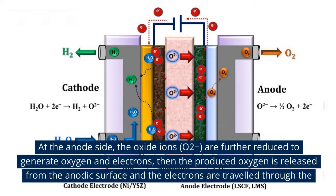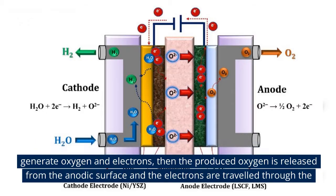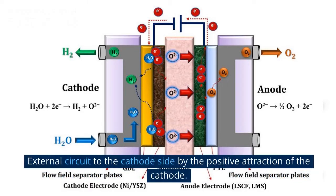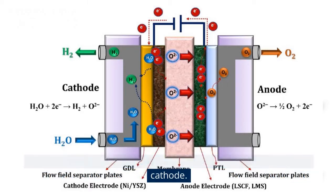At the anode side, the oxide ions, O2-, are further oxidized to generate oxygen and electrons. The produced oxygen is released from the anodic surface and the electrons travel through the external circuit to the cathode side by the positive attraction of the cathode.